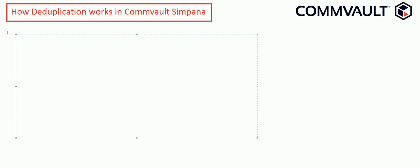There is also a new concept called global deduplication, which is very important. Global deduplication provides greater flexibility in defining retention policies when protecting data — for example, consolidating remote office backup data in one location, managing data types such as file system and virtual machine data, and deduplicating it all globally. This is what we call a global deduplication strategy.